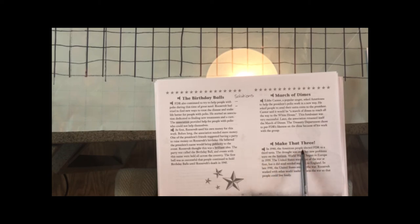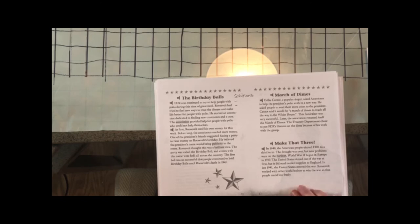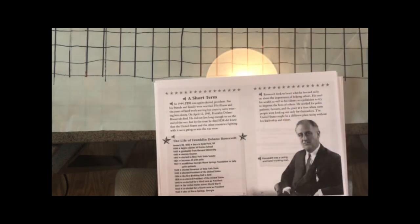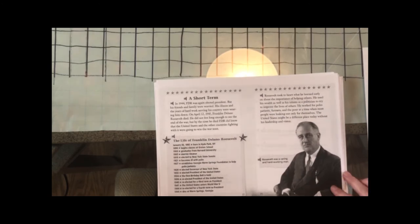In 1940 the American people elected FDR to a third term. The drought was over, but new problems were on the horizon. World War II began in Europe in 1939. The United States stayed out of the war at first, but it did send needed supplies to England. In late 1941, the United States entered the war. Roosevelt worked with other world leaders to win the war so that people could live freely.